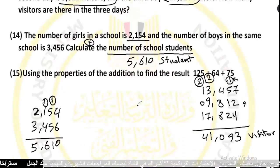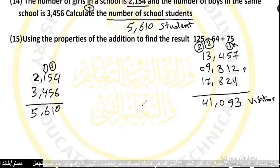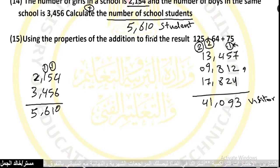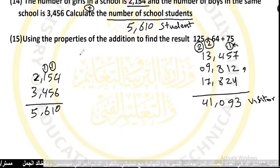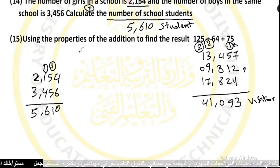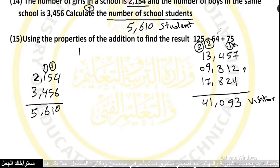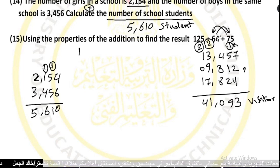The expression is 125 plus 64 plus 75. We can use the commutative property by swapping the places of 64 and 75, rewriting it as 125 plus 75 plus 64.